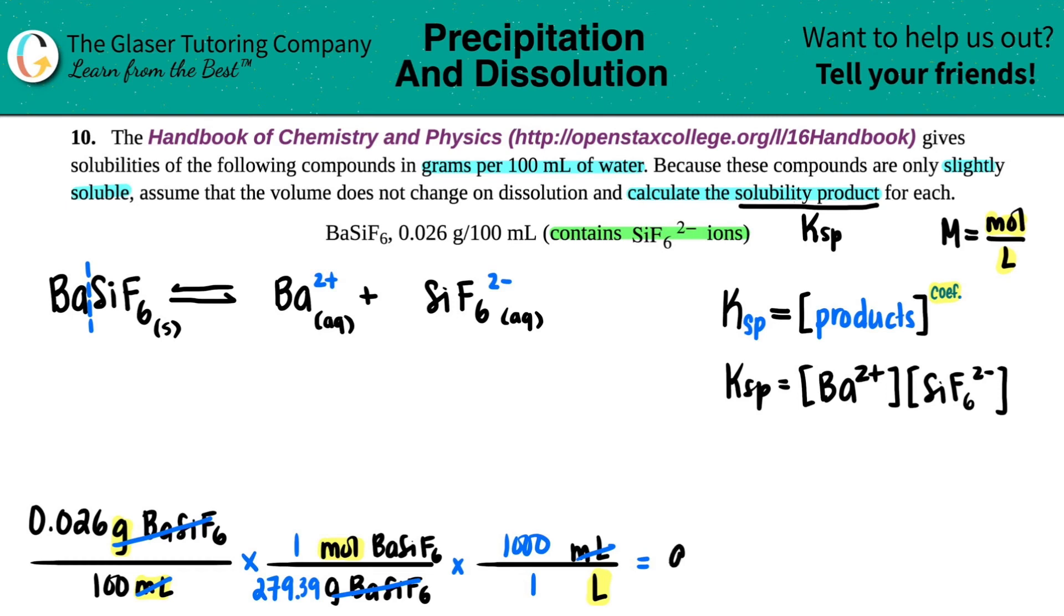So let's just do this math. 0.026 divided by 279.39, and then I'm going to just multiply by a thousand. And we get 9.306 times 10 to the negative fourth. And this is mole divided by liter, which is the same thing as molarity. So this number that we just found, this solubility, this molarity is for the starting material. So I have 9.306 times 10 to the negative fourth molarity.